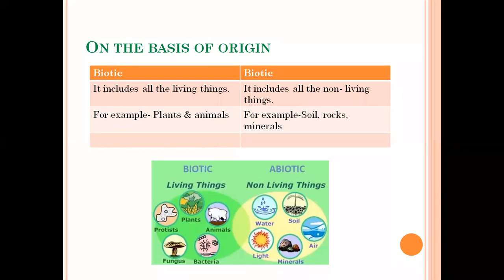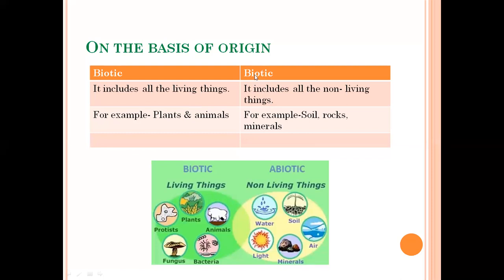We also classified natural resources on the basis of origin — from where did they originate. On the basis of origin, we have biotic and abiotic components. All living things are biotic resources, and all non-living things are abiotic resources. Sorry, there was a mistake there — let me clarify: living things are biotic resources.